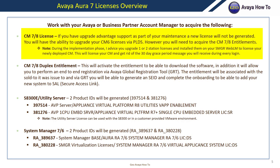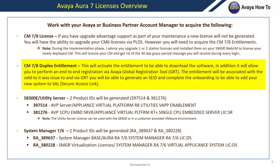During the implementation phase, I advise you upgrade one or two station licenses and install them on your System Manager Web LM to license your newly deployed CM. This will license your CM and get rid of the 30-day grace period message you will receive during every login. CM78 duplex entitlement will activate the ability to download the software and allow you to perform an end-to-end registration via Avaya Global Registration Tool, or GRT.